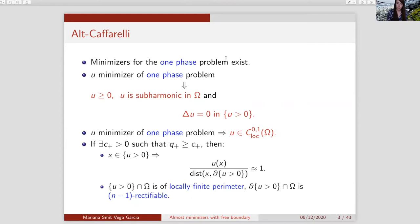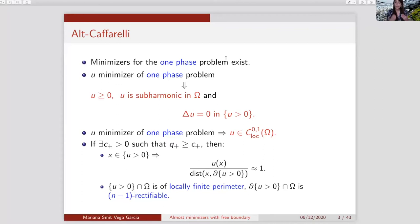The positivity set is of locally finite perimeter, and the free boundary is N-minus-one rectifiable. To say it is N-minus-one rectifiable means there are countably many Lipschitz functions from R^{n-1} to R^n whose images cover the free boundary except possibly for a set of (n-1)-dimensional Hausdorff measure zero. So from the PDE properties, we get regularity for the minimizers and information about the free boundary.